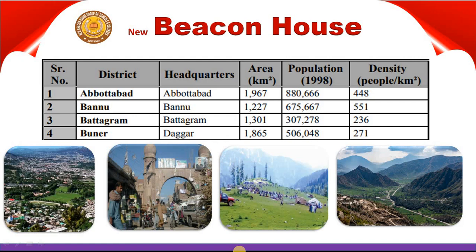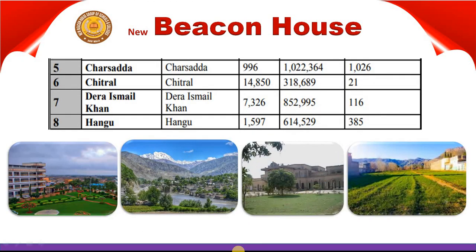The fourth district is Bannu. Its headquarter is Dagar and its area is 1,865 km². Its population according to 1998 is 506,048 people and the density is 271 people per km². The fifth district is Charsadda. Its headquarter is also in Charsadda. It has an area of 996 km², a population of 1,300,364, and a density of 1,026 people per km².